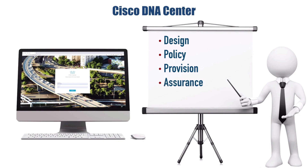Another big part of Cisco DNA Center is Assurance, and this is where we can monitor the health of the network. This is going to help us with troubleshooting. If there are existing faults we can see what those are, and based on the experience of Cisco Tech, DNA Center is going to give us feedback about what we should do to resolve the issue. It's also got a path trace tool — if we're not getting from point A to point B in the network, we can say what if I tried to do a ping or a Telnet session between these two devices. If there's an access control list blocking that traffic, it's going to give us a graphical representation of the network and show us exactly where that ACL lives that's blocking our traffic.